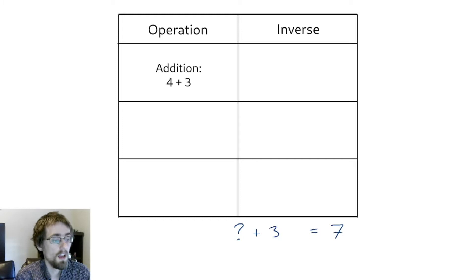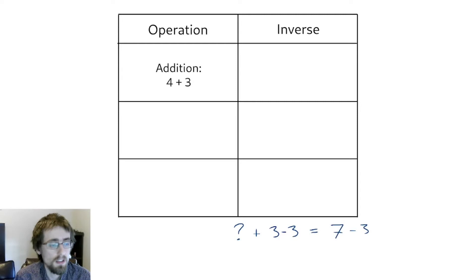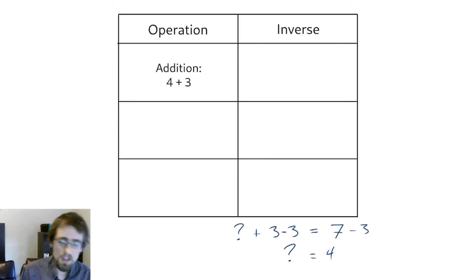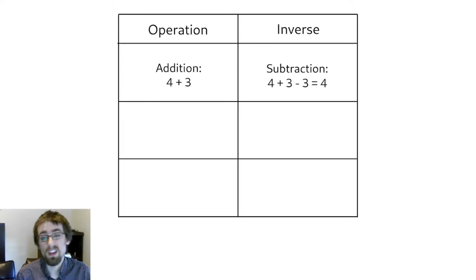If we want to figure out how many apples we had at the beginning of the day, we have to undo the plus three. To undo the plus three, we can just do minus three. So we get that the number of apples I had this morning is equal to four. Because minus three undoes the plus three, we say that subtraction is the inverse of addition. If I want to cancel a plus something, I just do minus that thing.